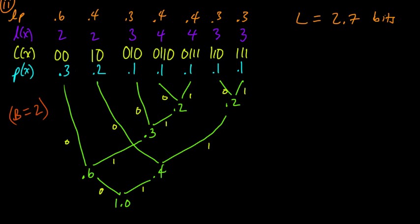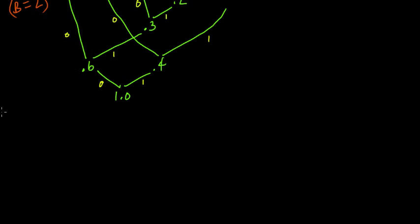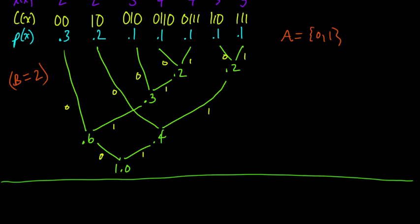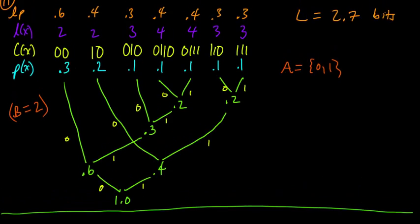So far we've looked at a few examples of how to apply the Huffman algorithm to produce an optimal code using a binary code alphabet — where b equals two, so two elements. But Huffman's algorithm can also be applied to generate optimal codes for arbitrary b: three, four, five, six, whatever. In this video we're going to take a look at a couple of examples of how to apply Huffman for more general b.